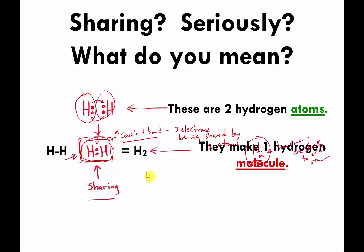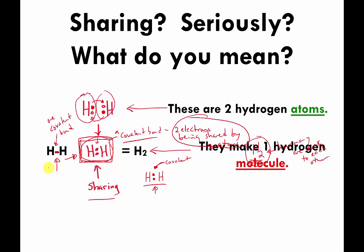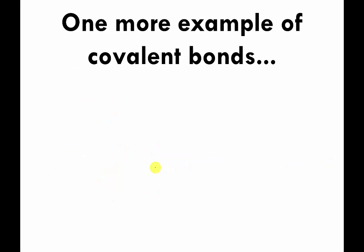A covalent bond can be drawn by showing two little dots between the two atoms — those represent two valence electrons being shared. However, that is considered a bit tedious. The more common way is to substitute those two dots with a single solid line. So if you see a single solid line between two atoms, that means one covalent bond — or two electrons being shared by two atoms. You should be able to recognize both ways of drawing this.